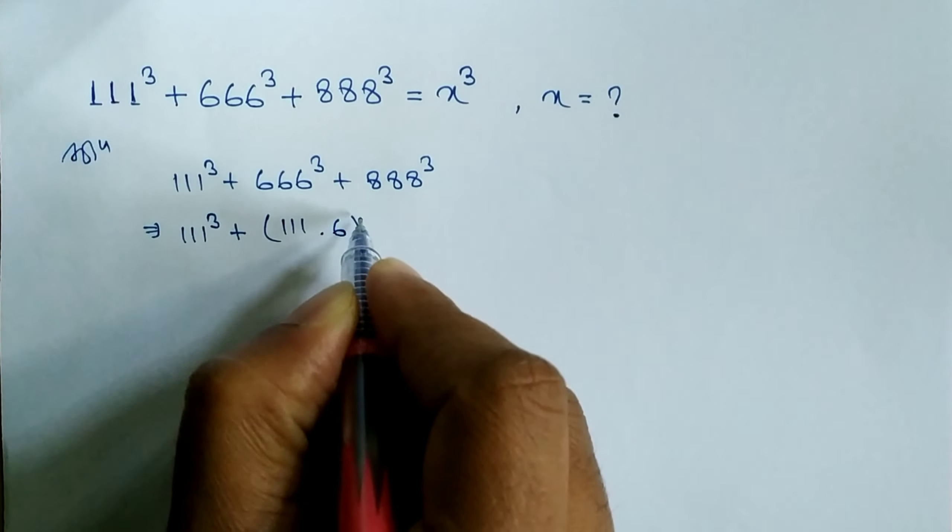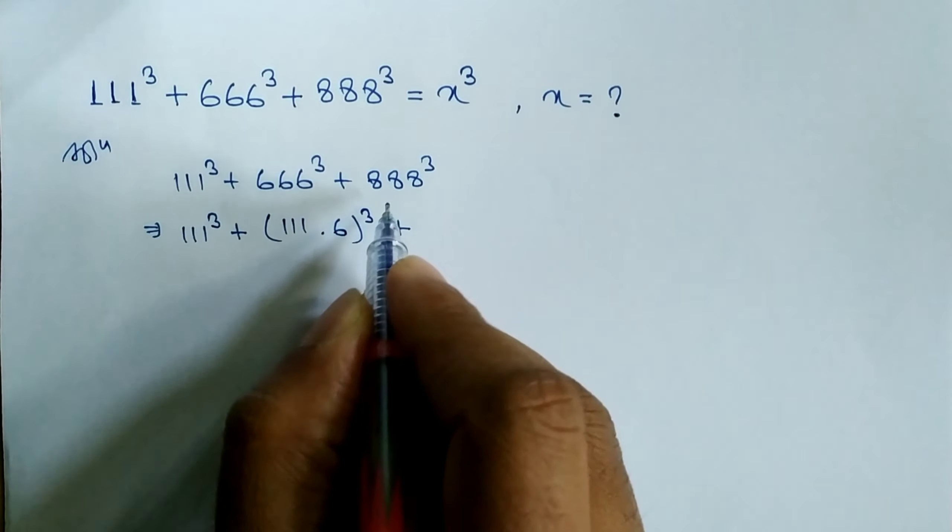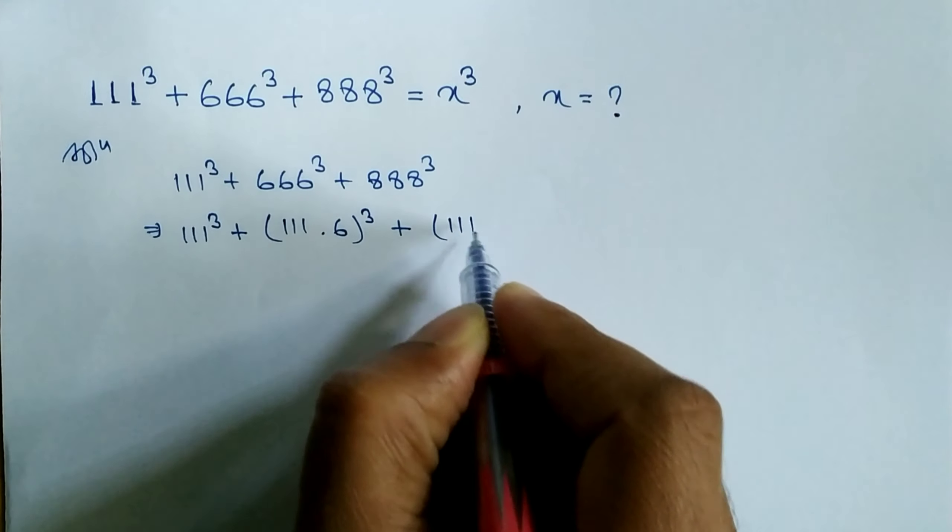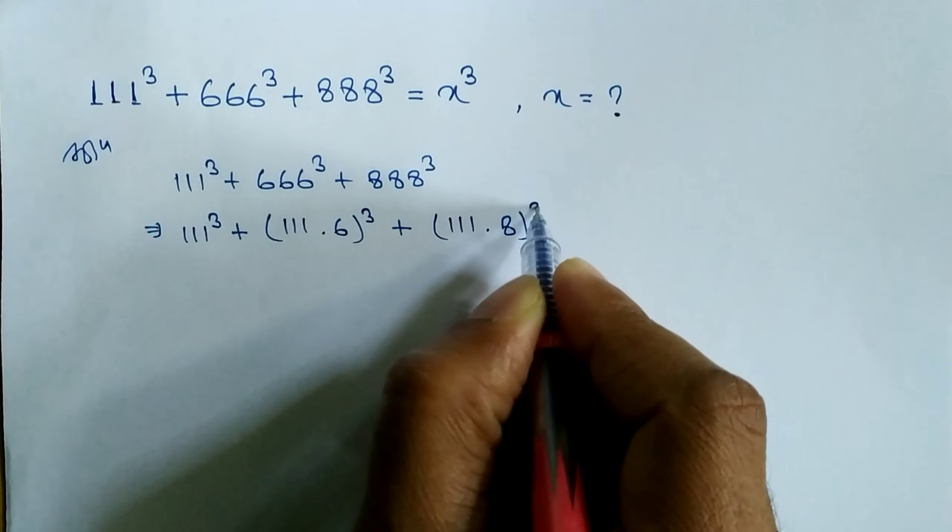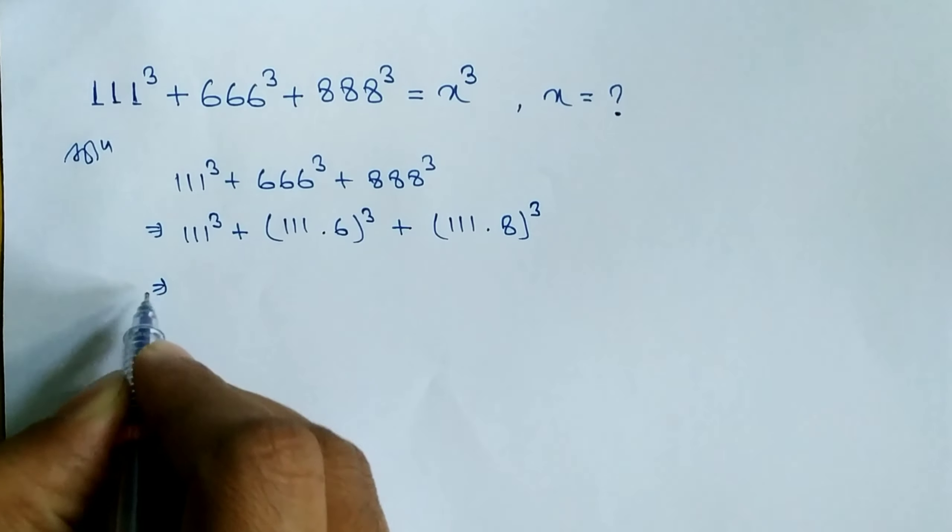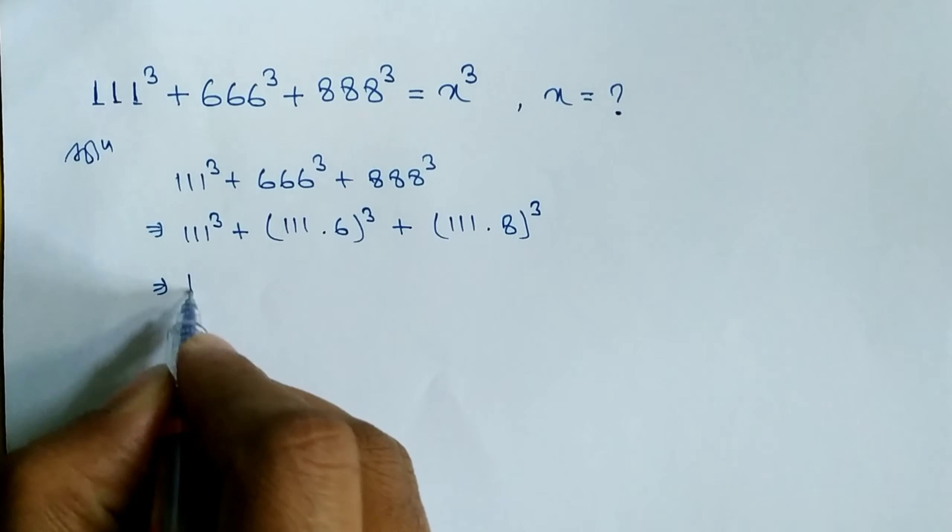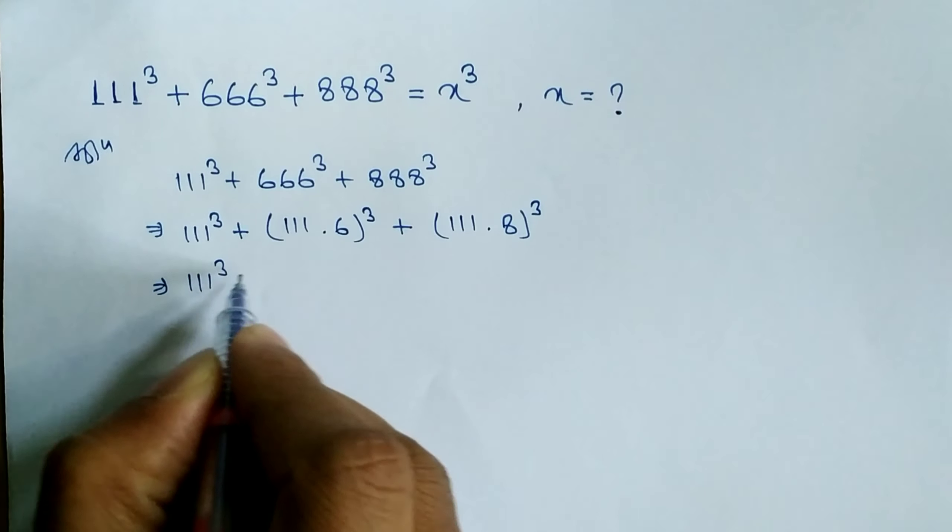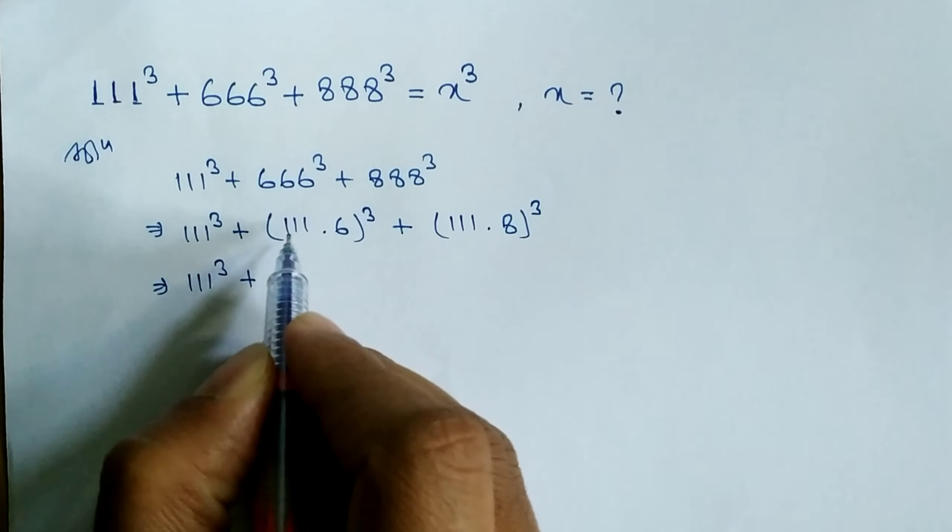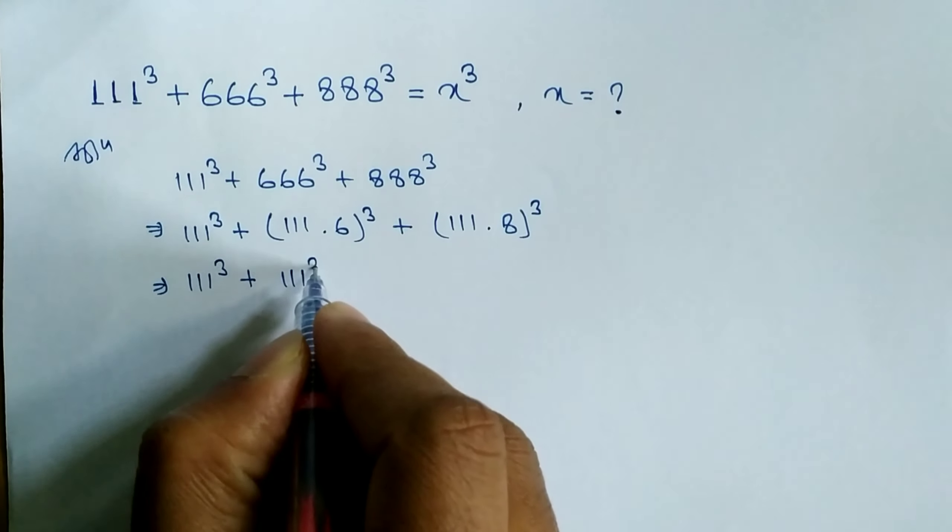Similarly, 888 is there, we can write 111 × 8 to the power 3. Now we have to use the law of exponents. 111³ plus this power 3 for both the terms we can write here 111³ × 6³.